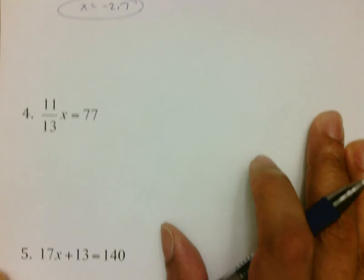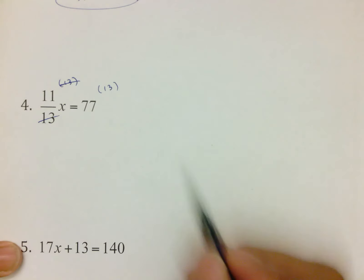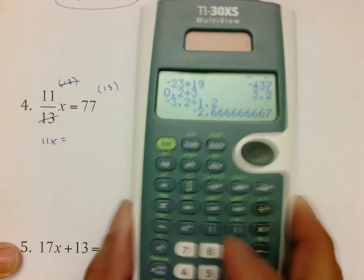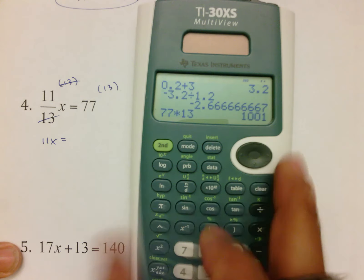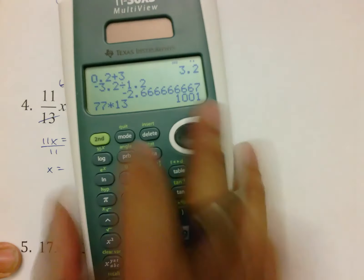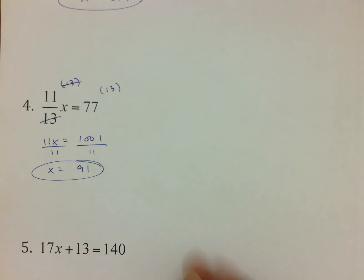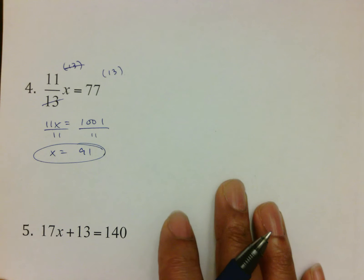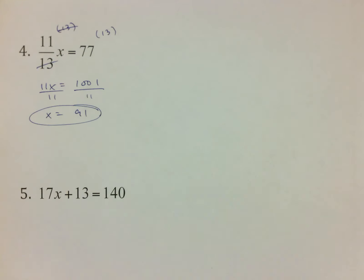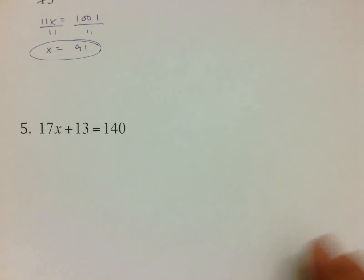Number 4 has 11 over 13x equals 77. It's another fraction. Key thing to remember here is that when we multiply by 13 on both sides, make sure that those two things cancel out, bringing down 11x and whatever 77 times 13 is, which is 1,001. Afterwards, divide by 11 and get 91 as your answer. Also, make sure you're typing some of these things in to verify. You've got two days to go through this thing. Make sure you're taking advantage of this so you can get a nice grade on it.